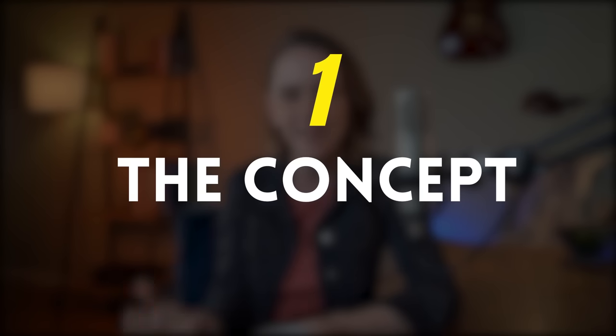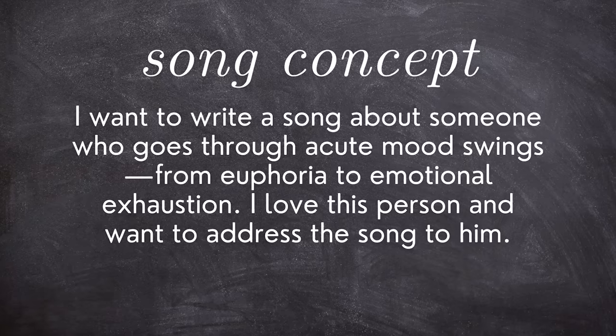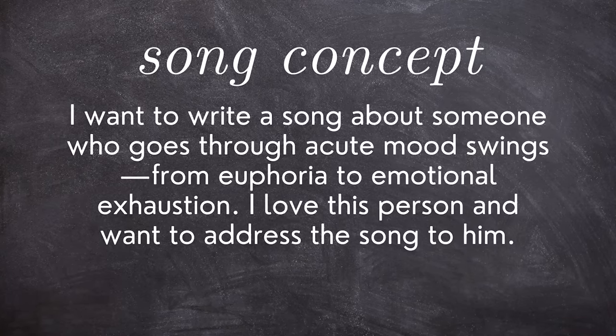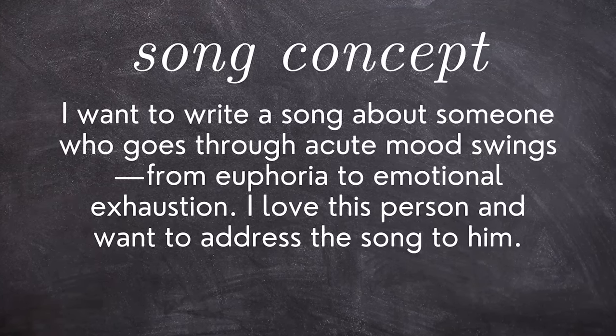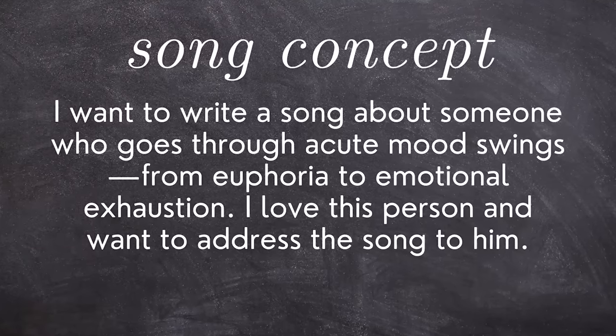Let's dig into the first component of our formula: the concept. A concept is the general idea of what you want to write about. In the book Tune Smith written by the celebrated songwriter Jimmy Webb, he gives an example of a song concept: I want to write a song about someone who goes through acute mood swings from euphoria to emotional exhaustion — I love this person and want to address the song to them. A song concept can also just be an interesting angle of approach — for example, I want to write a love song addressed to a person's father who's refusing to let me propose to that person.